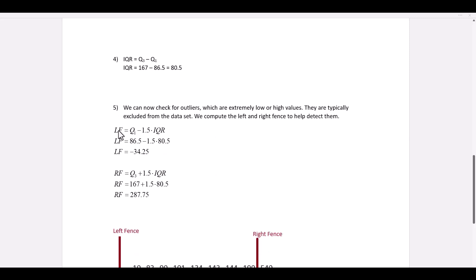So the left fence is quartile 1 minus 1.5 times IQR. Insert the values, and we end up computing the left fence as negative 34.25.